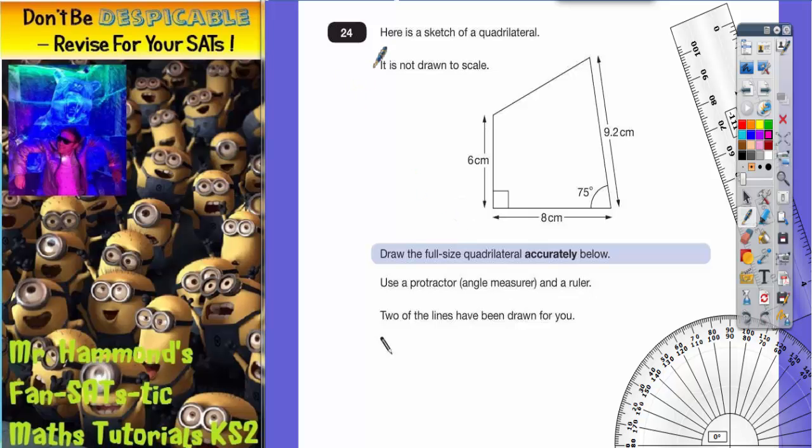Question 24, a level 5 question. Here is a sketch of a quadrilateral—remember, a quadrilateral has four sides. It is not drawn to scale, which means the 6 centimeters on the paper won't necessarily be exactly 6 centimeters if you measure it, and the 8 centimeters won't be exactly 8 centimeters either.